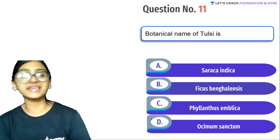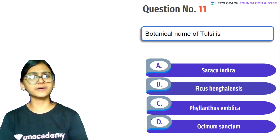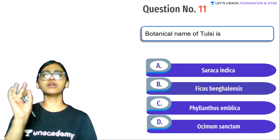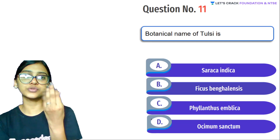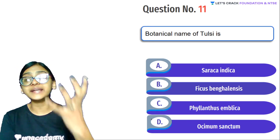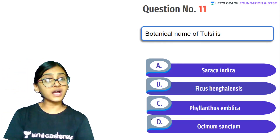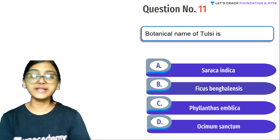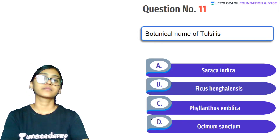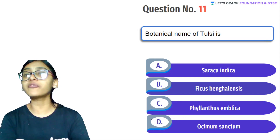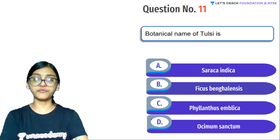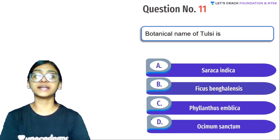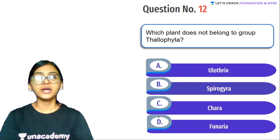Next question: Botanical name of Tulsi. Tulsi is a divine and auspicious plant with high medicinal value — used for cough, cold, and fever. The options are: Saraca indica, Ficus bengalensis, Phyllanthus emblica, Ocimum sanctum. Saraca indica is the scientific name of the Ashoka tree. Phyllanthus emblica is the scientific name of Amla. Ocimum sanctum is the scientific name of Tulsi.